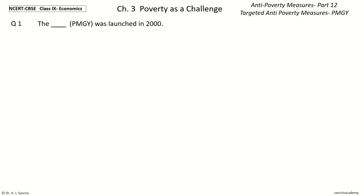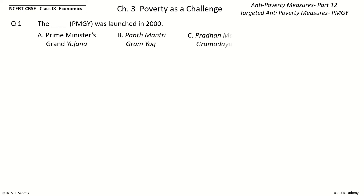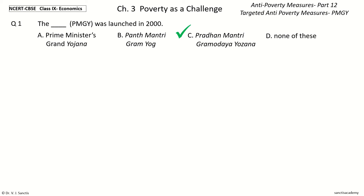Question 1: The blank PMGY was launched in 2000. The options are: (A) Prime Minister's Grand Yojana, (B) Pant Mantri Gram Yog, (C) Pradhan Mantri Gramodaya Yojana, (D) None of these. Your time to choose. And the answer is Pradhan Mantri Gramodaya Yojana.